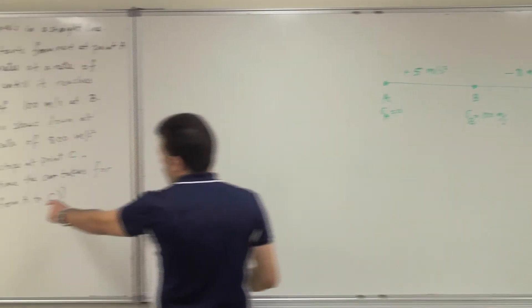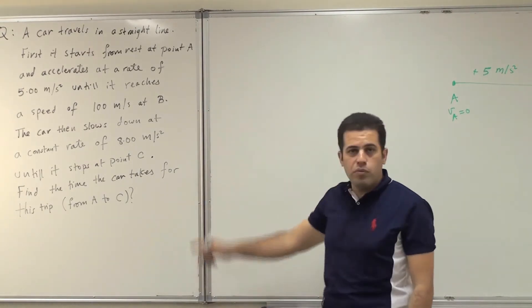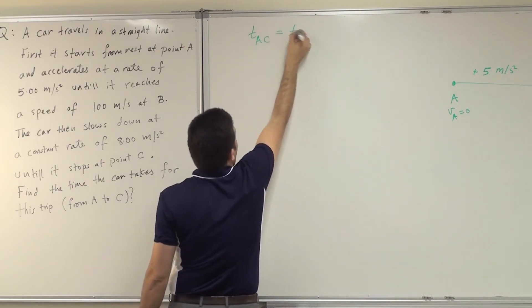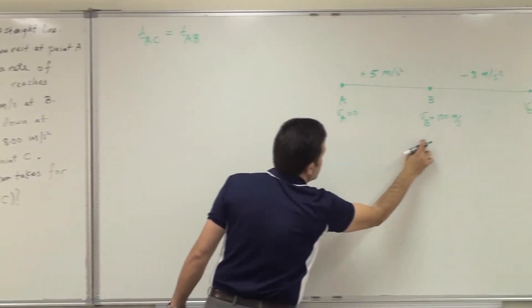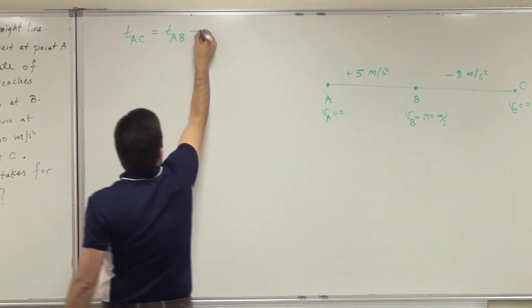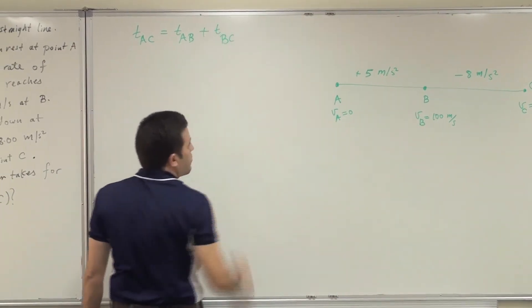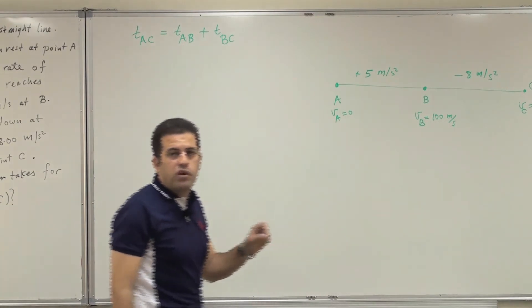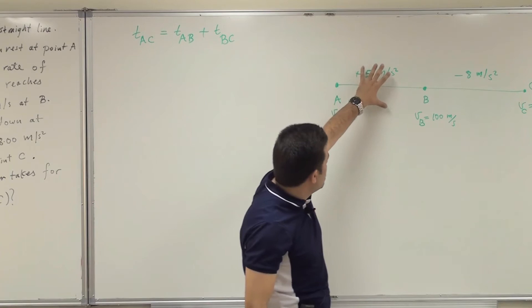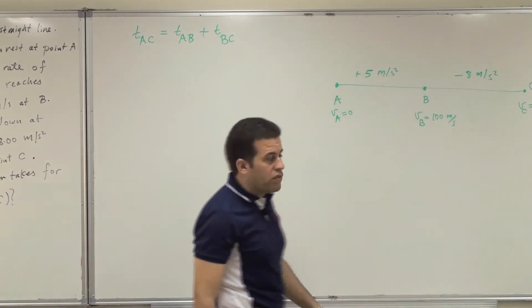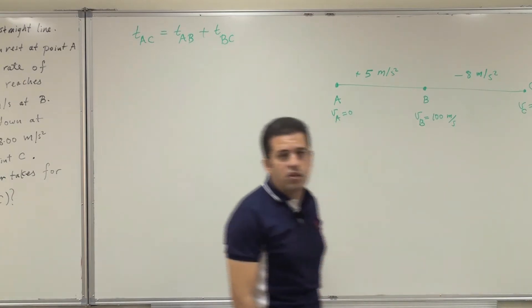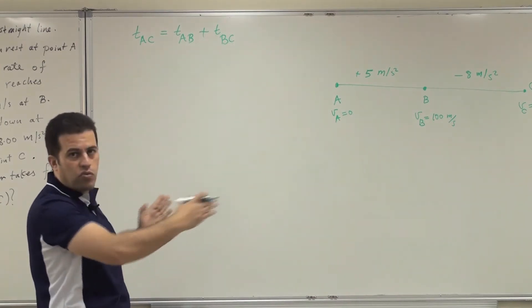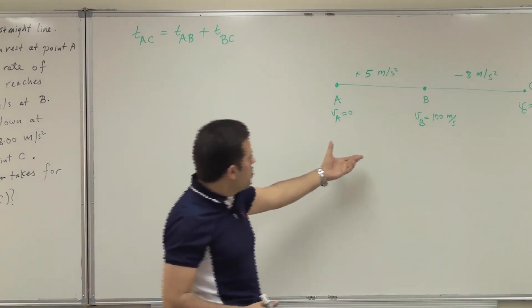The question asks for the time the car takes from A to C. The total time from A to C equals time from A to B plus time from B to C. I cannot treat this as one trip because the acceleration is not constant — it was 5 from A to B and then minus 8 from B to C. So I need to break the problem into two stages.